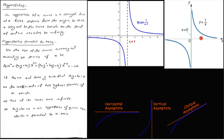An asymptote is a line such that the distance between the curve and the line approaches 0 as one or both coordinates — x or y — tend to infinity. For example, for the curve y = 1/x, as x approaches infinity or minus infinity, the distance between the curve and the asymptote approaches zero.